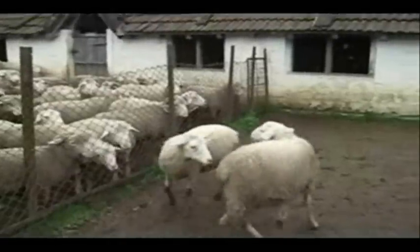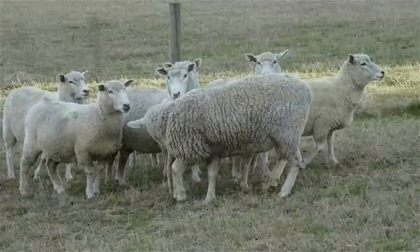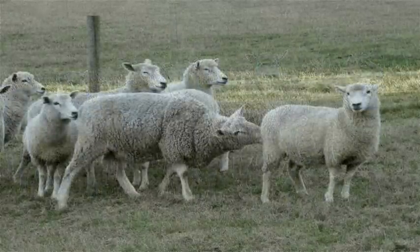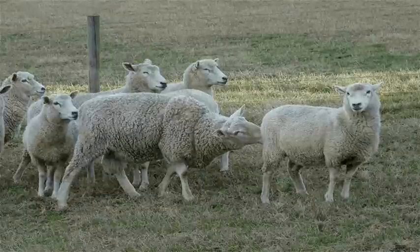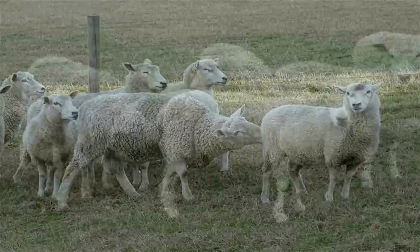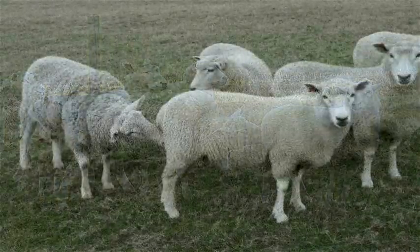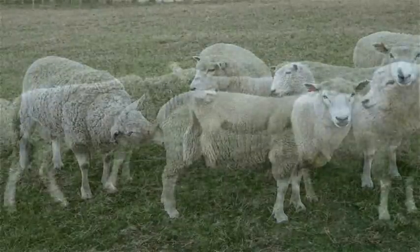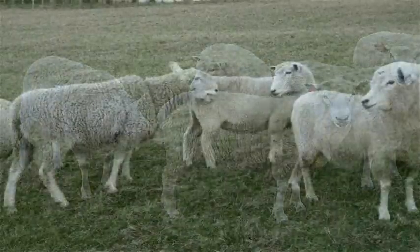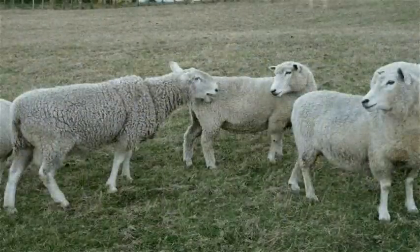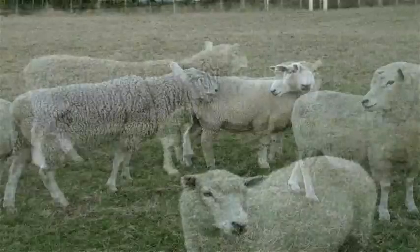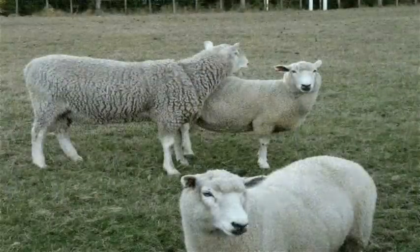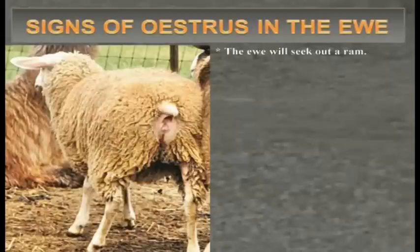From about the fifth to the fiftieth hours of estrus, the ewe is notably more aggressive. Soliciting behavior takes the form of approaching the ram, nuzzling and pushing its head into the flank and scrotal regions. Low intensity responses supervene from the fifteenth hour to the end of estrus, grading into avoidance behavior characteristic of the non-estrus ewe.